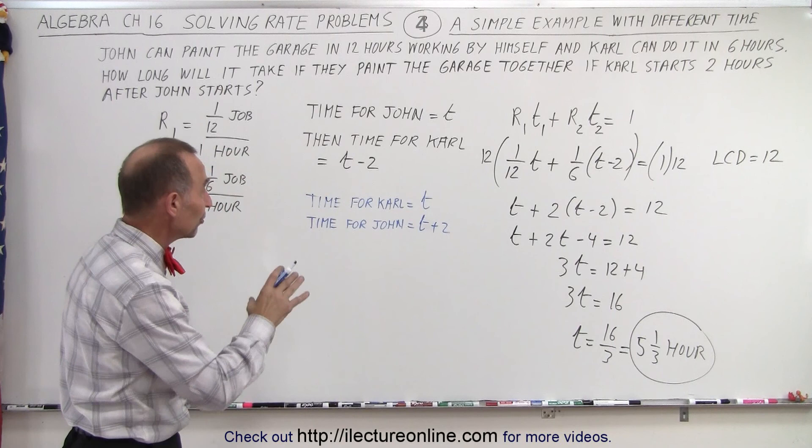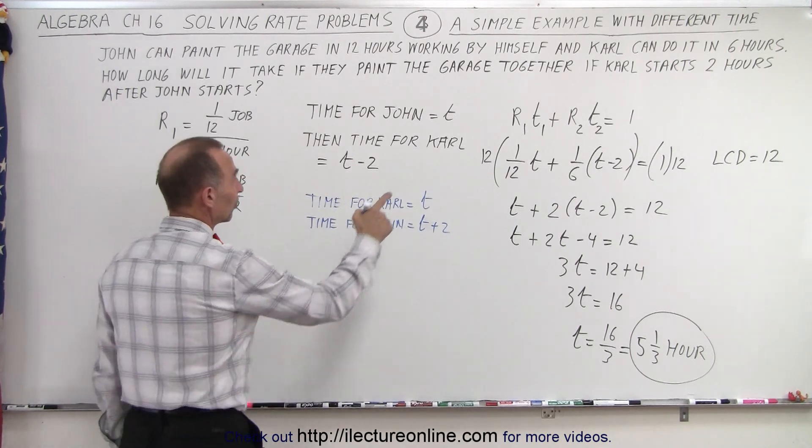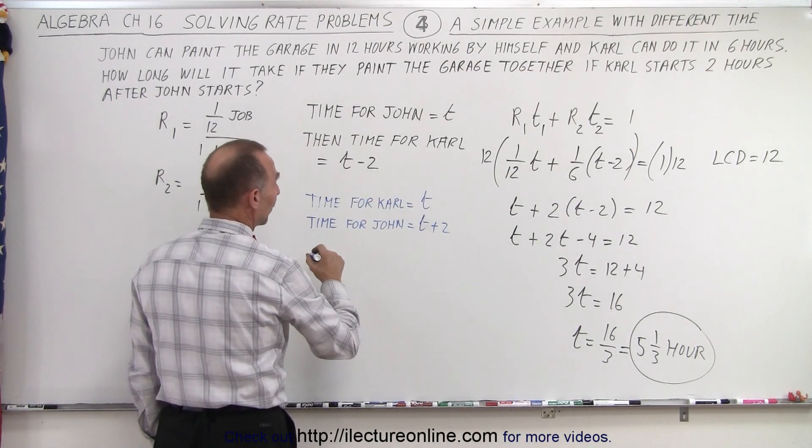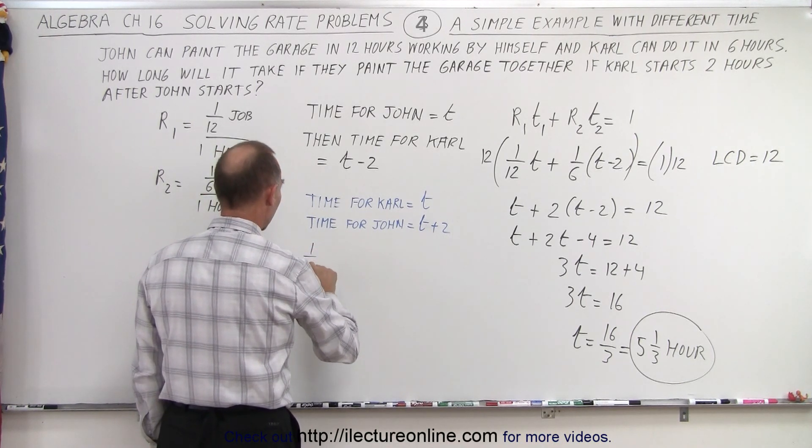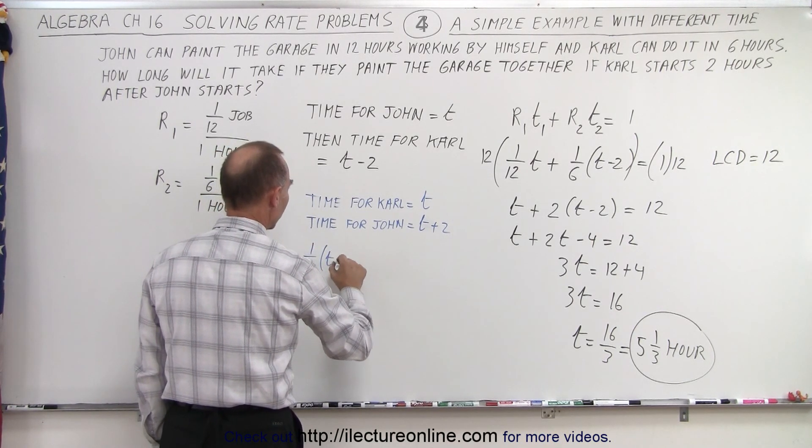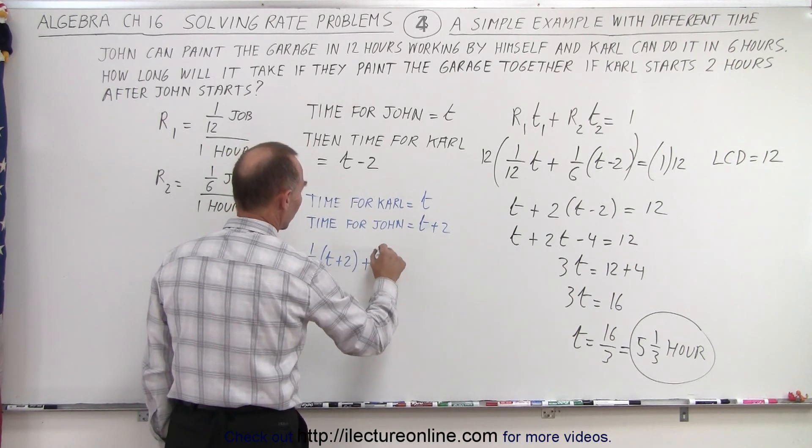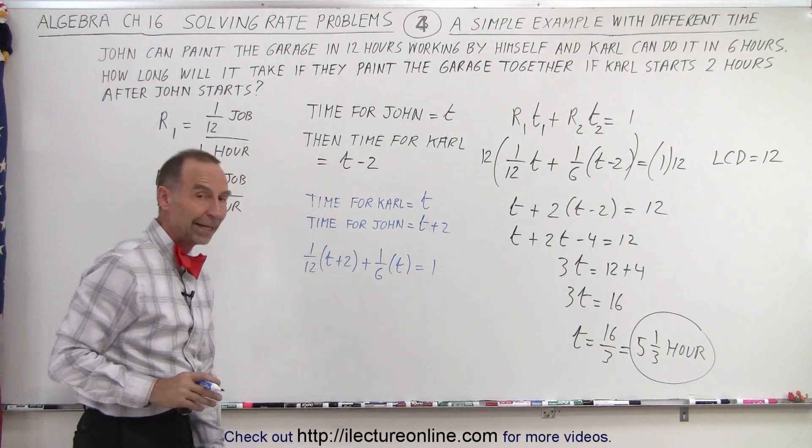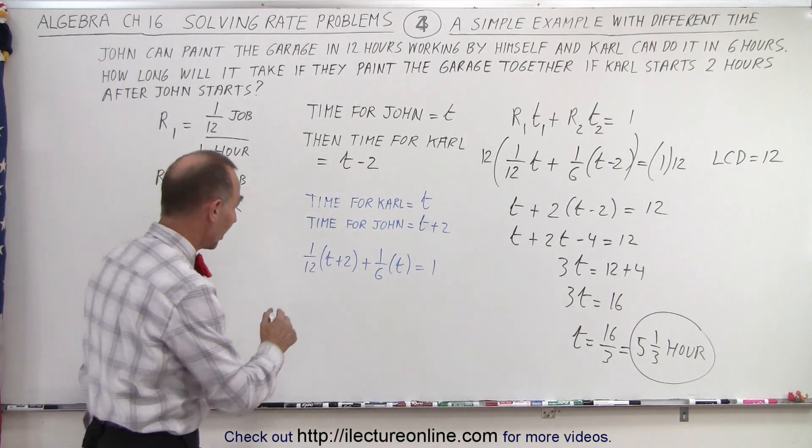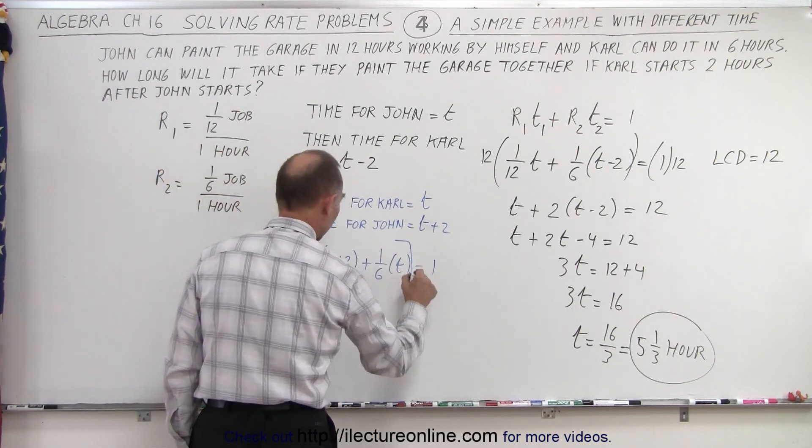We have the rate for John would be 1/12 and the time for John would be t plus 2, plus the rate for Carl times t equals the whole job done. Again, we would multiply both sides by the lowest common denominator, which is 12.